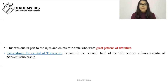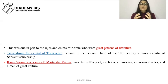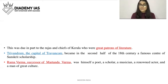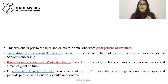Trivandrum, the capital of Travancore, became in the second half of the 18th century a famous center for Sanskrit scholarship. Rama Varma, the successor of Marthanda Verma, was himself a poet, scholar, musician, renowned actor, and a man of great culture. Malayalam literature grew in the 18th century due to royal patronage. He conversed fluently in English, took a keen interest in European affairs, and regularly read newspapers and journals published in London, Calcutta, and Madras.